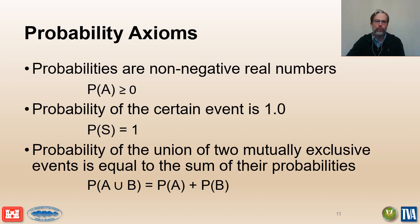The first two rules tell us that every probability must be a numerical value between 0 and 1. The third rule provides the basis for all of the calculations that we use to combine probabilities in an event tree analysis.